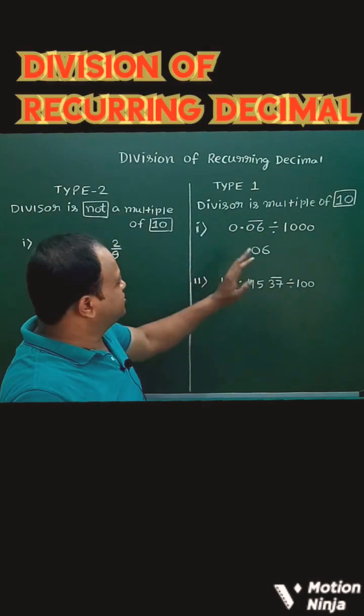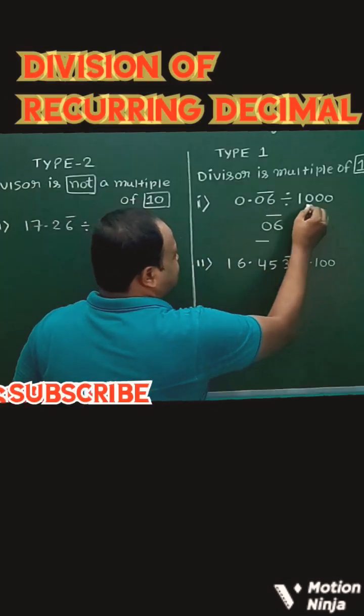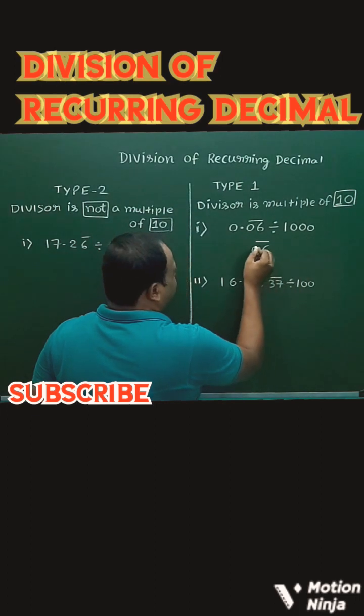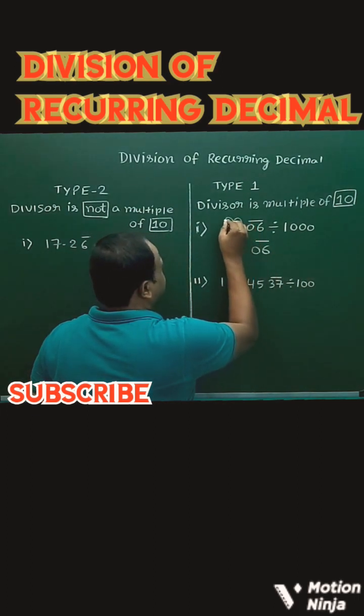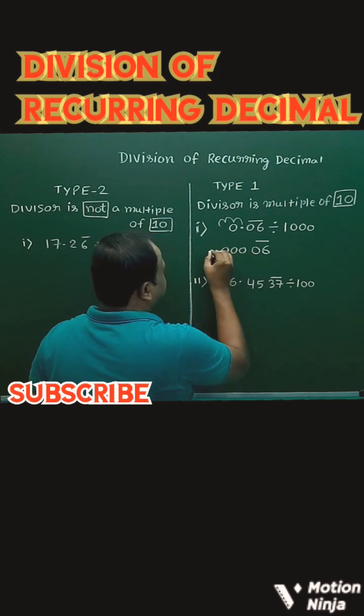If the divisor is a multiple of 10, then you simply copy the dividend. Here there are three zeros, so move three places backward. That is, here I will put three zeros and then the decimal point.